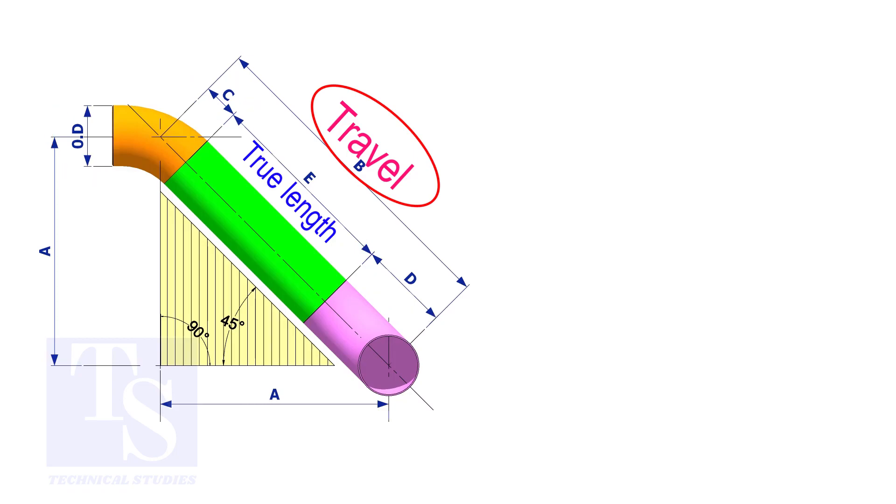Assume that the elbows are short radius. Nominal pipe size is 4 inch. The travel length is 1500 millimeters. The joint gap is 3 millimeters. Calculate the true length of the spool.